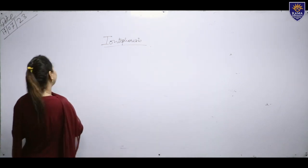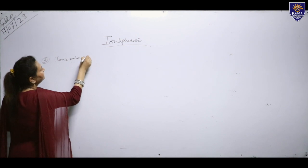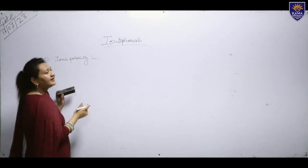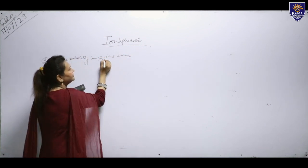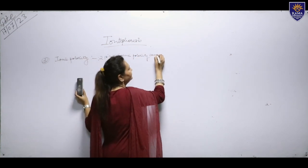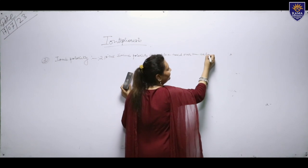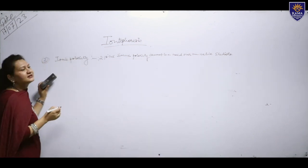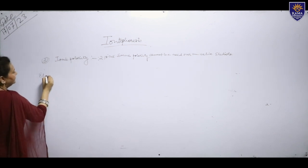The third complication is ionic polarity. It is always advised that two ions having the same polarity cannot be used over an active electrode. This was the third basic complication of iontophoresis.